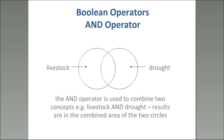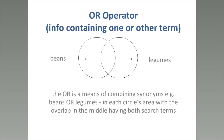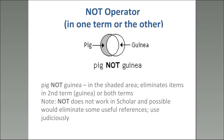Many of you will probably know about Boolean operators. These are words you can add to your search to expand, limit, and focus your search. AND is a classic one — livestock AND drought will give you results that apply to both. OR expands results: beans OR legumes finds results with either term. NOT excludes terms — for example, pig NOT guinea pig. These are ways to help focus your search.